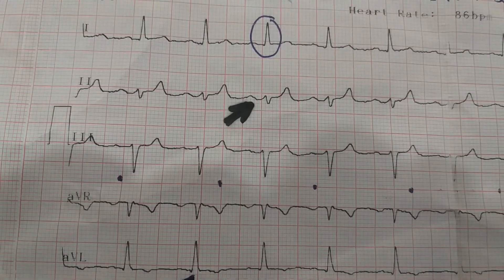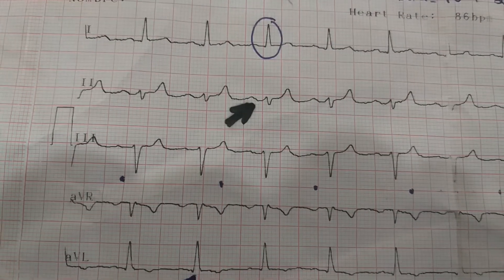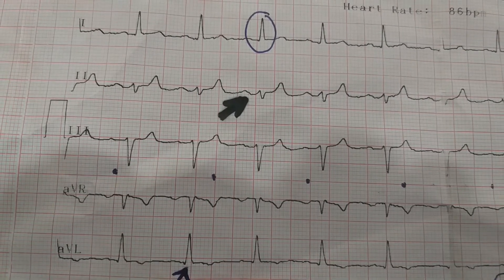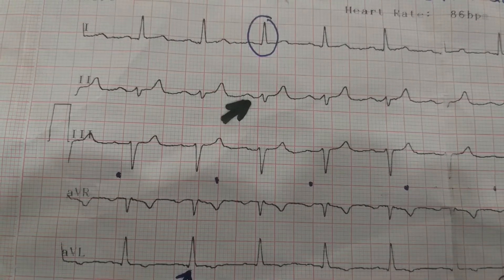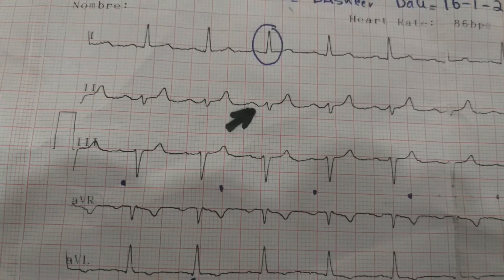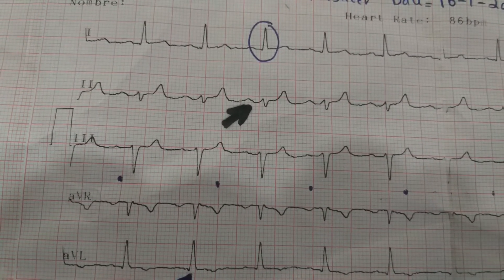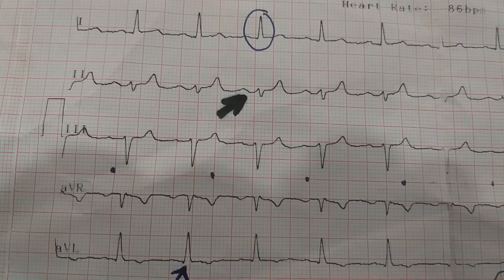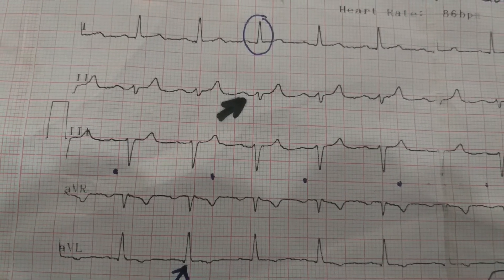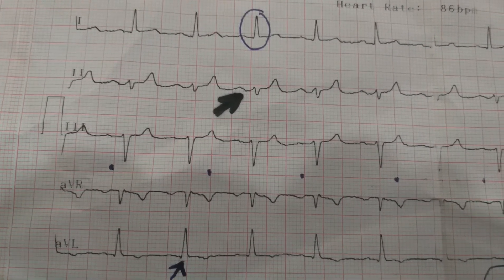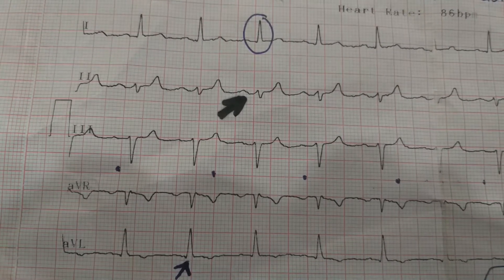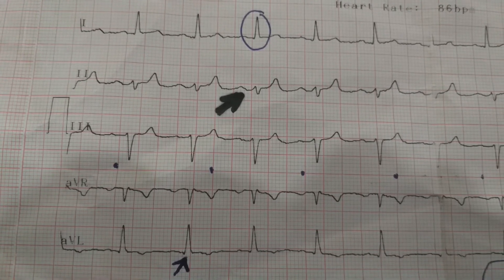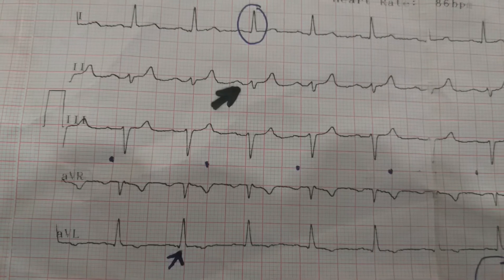Major causes of right atrial hypertrophy are tricuspid valve stenosis or tricuspid regurgitation, and it can also be a consequence of right ventricular hypertrophy because back pressure ultimately comes to the right atrium. Clinically, if you pass a central line, there can be falsely elevated right atrial pressure, so this factor should always be kept in mind when assessing the hemodynamic state of the patient.